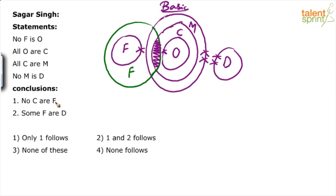So no C are F, though it satisfies the basic diagram, it should be taken as a wrong conclusion because it fails in the possible diagram.